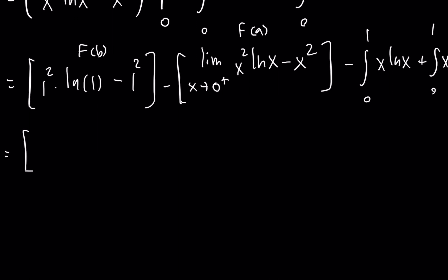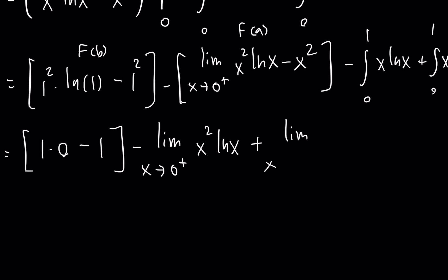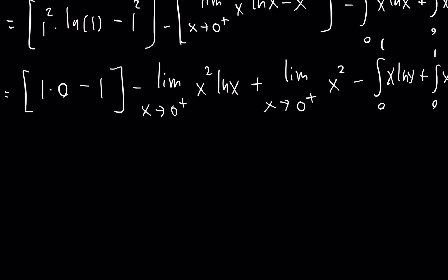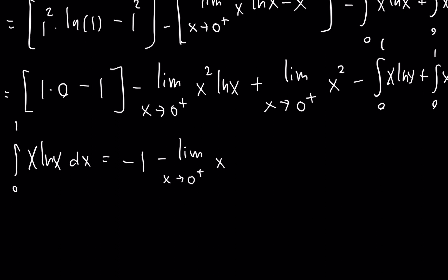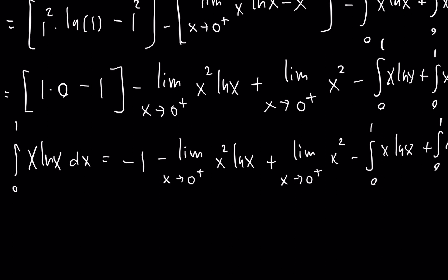The natural log of 1 is 0, so 1 times 0 minus 1 gives negative 1. Distributing further: minus the limit as x approaches 0 from above of x squared ln x, plus the limit as x approaches 0 from above of x squared, minus the integral from 0 to 1 of x ln x, plus the integral from 0 to 1 of x dx. So the integral from 0 to 1 of x ln x dx equals negative 1, minus that limit, plus the limit of x squared, minus the integral of x ln x, plus the integral of x dx.